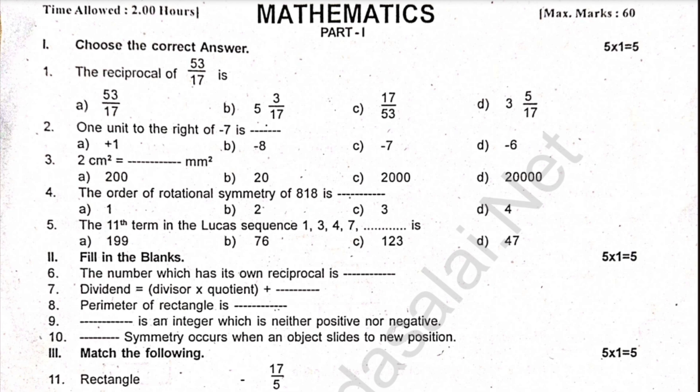Next, fill in the blanks. 5 questions. The number which has its own reciprocal is dash. Dividend equals divisor into quotient plus dash. Perimeter of rectangle is dash. Dash is an integer which is neither positive nor negative.